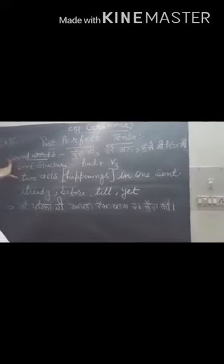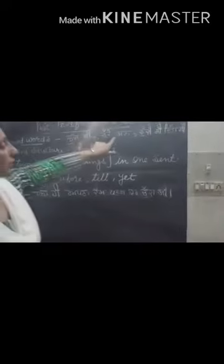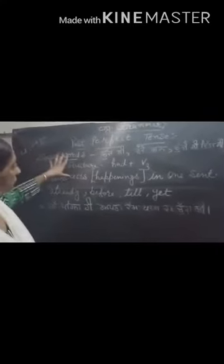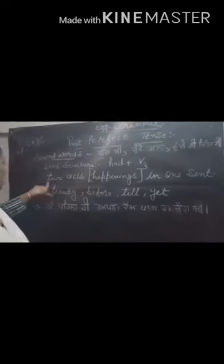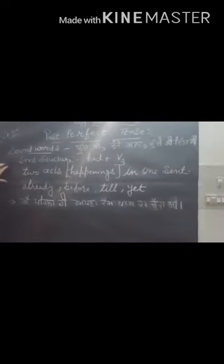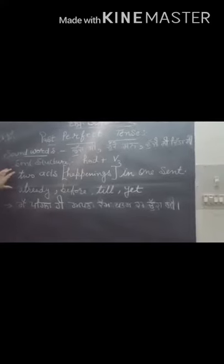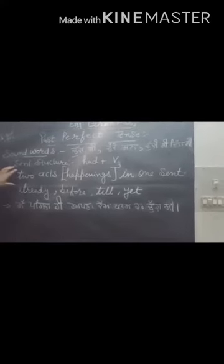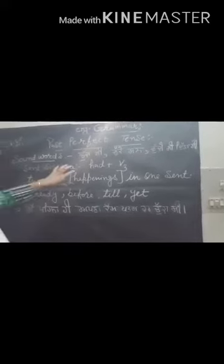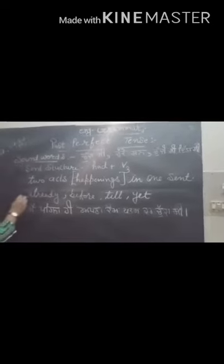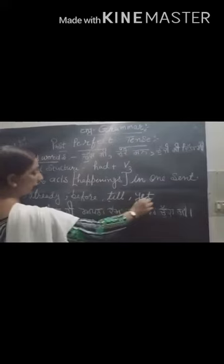Some words for past perfect tense are chukka si, chukki san, chukki si, ditta si, etc. The sentence structure is had plus third form. There are not many things to use, only had and third form. This type of sentence is when we have two actions or acts happening at the same time, and for that we are using the link words of already, before, till, yet, etc.